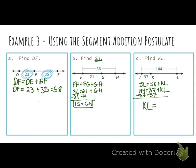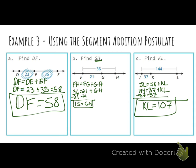It's asking us to find KL, so I'm going to get that by itself. What do I have to do to get KL by itself? Subtract. So we're going to subtract our 37. What is 144 minus 37? 107. So KL equals 107. Over here, I could have written DF equals 58. Any questions so far on this?